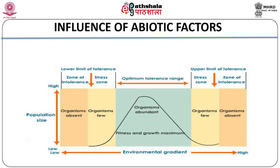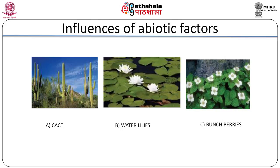Conversely, the showy lady's slipper orchid has a narrow tolerance range and is found only in specific types of wetlands. Cacti can withstand long periods of drought, but if overwatered they may die because their roots cannot survive consistently damp conditions. Aquatic plants such as water lilies will perish quickly if the water level drops and the roots are exposed to air. While both cacti and water lilies prefer exposure to full sun, bunch berries are adapted to shade. This is how abiotic factors influence living organisms, especially plants and animal life.